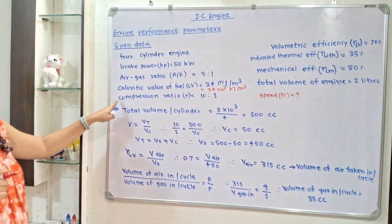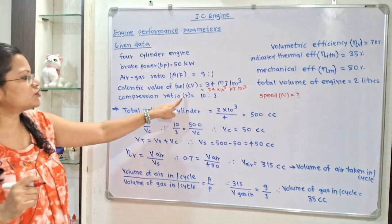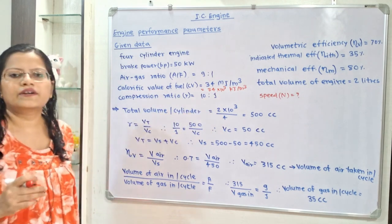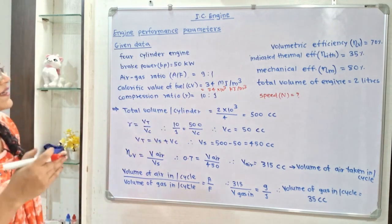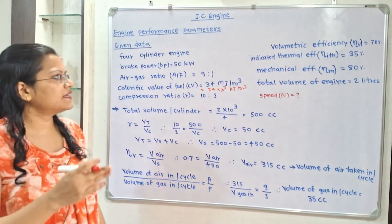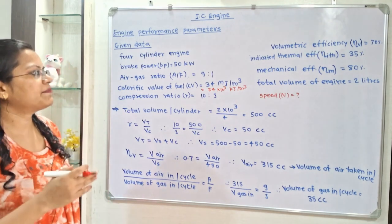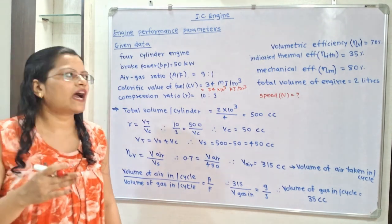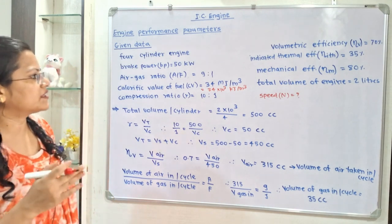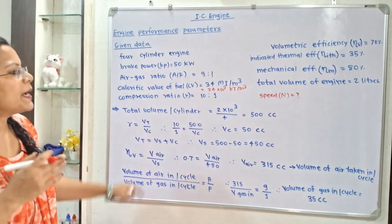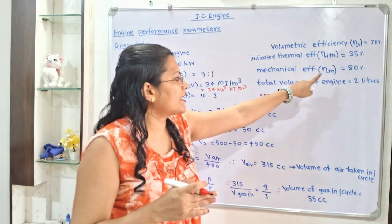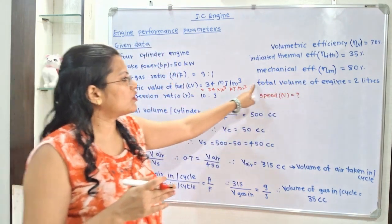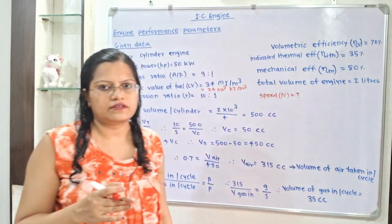Compression ratio R is equal to 10:1. Volumetric efficiency η_V is 70%, indicated thermal efficiency η_ITH is 35%, mechanical efficiency η_M is 80%, and the total volume of the engine is 2 liters.